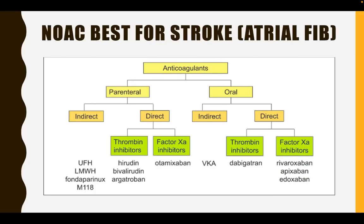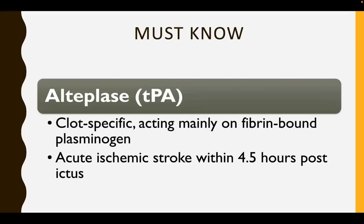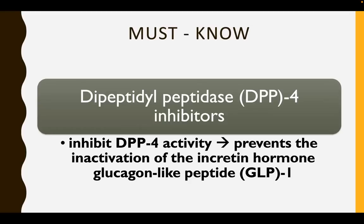What NOAC is best for stroke patients with ischemic stroke who have atrial fibrillation? You can either give dabigatran or rivaroxaban — the brands are Xarelto and Pradaxa. This is a must-know for your boards: what is the thrombolytic of choice for acute ischemic stroke arriving within the golden period of 4.5 hours post-ictus? It is rTPA or recombinant TPA — this is alteplase. The most dreaded complication is intracerebral hemorrhage.